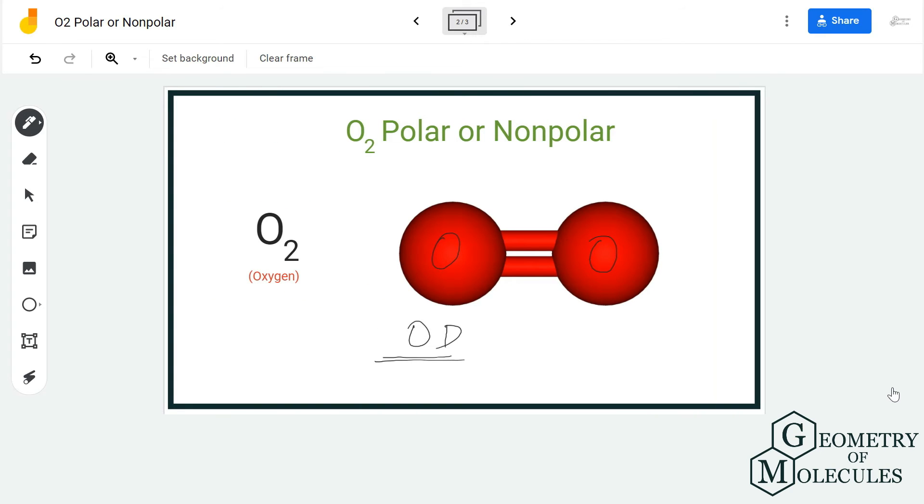Hence, when there are no poles formed in this molecule, it is a nonpolar molecule. So O2 is a nonpolar molecule because there is no net dipole moment, as both these atoms have similar electronegativities.